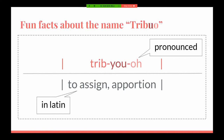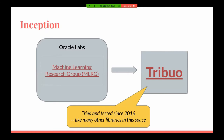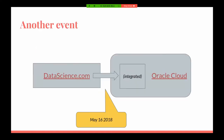An important piece of information: Tribio was incepted in the machine learning research group, which is part of Oracle Labs. It's a tried and tested library since 2016 — roughly that's when it was incepted. You can see that there were many other libraries incepted around that time or later on. Also, the company datascience.com was acquired by Oracle and is now integrated into Oracle Cloud since May 16th, 2018.